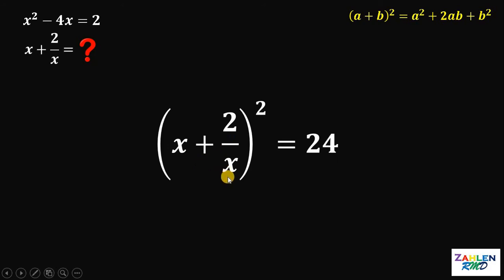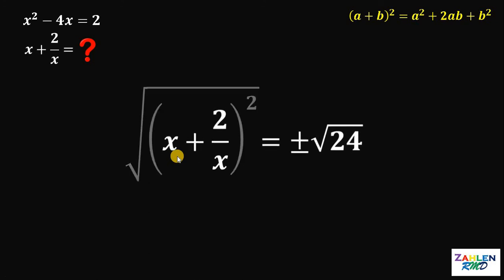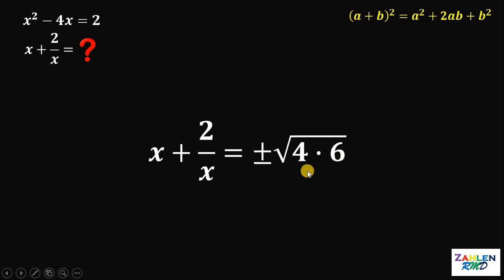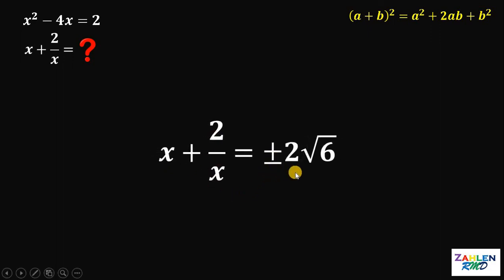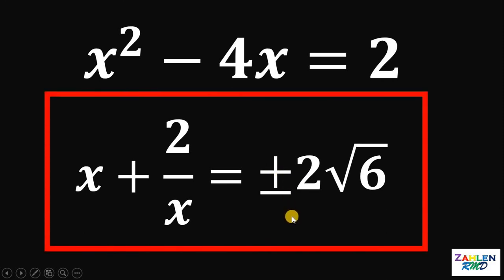To get the value of x plus 2 over x, we take the square root on both sides. Since we have a square, we have positive and negative — so there are 2 possible solutions. x plus 2 over x equals plus or minus the square root of 24. Since 24 factors as 4 times 6 and the square root of 4 is 2, the value of x plus 2 over x is positive or negative 2 times square root of 6. Therefore, if x squared minus 4x equals 2, the value of x plus 2 over x equals plus or minus 2 root 6. And as always, we are done.